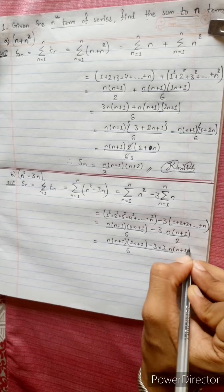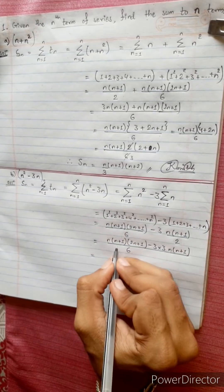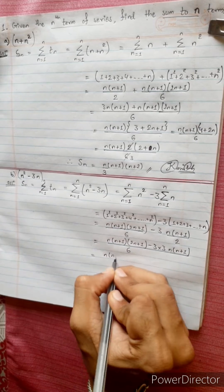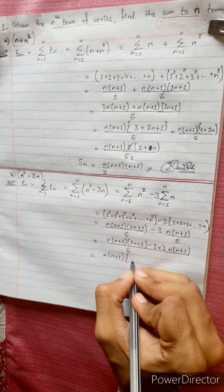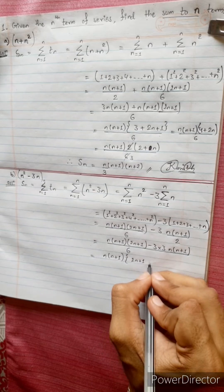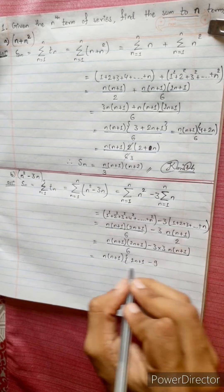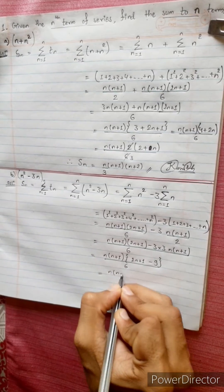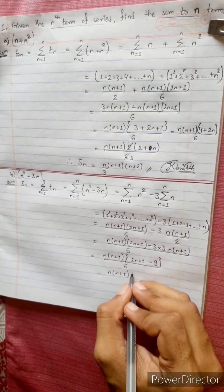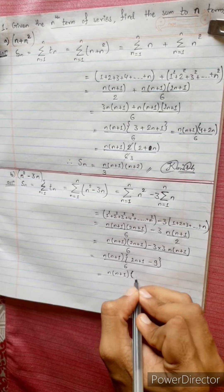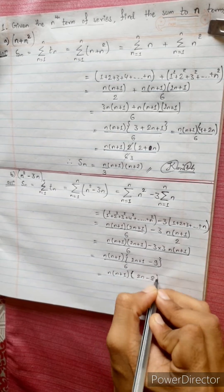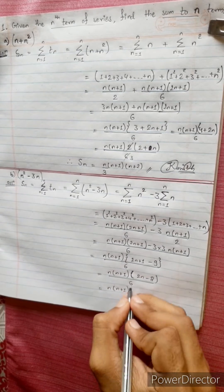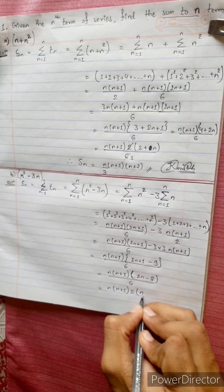This simplifies to n(n+1)(2n+1)/6 minus 3 times n(n+1)/2. Combining over a common denominator of 6: n(n+1) times quantity 2n+1 minus 9, which gives n(n+1)(2n minus 8) divided by 6. Taking 2 as a common factor from 2n minus 8 gives n minus 4.